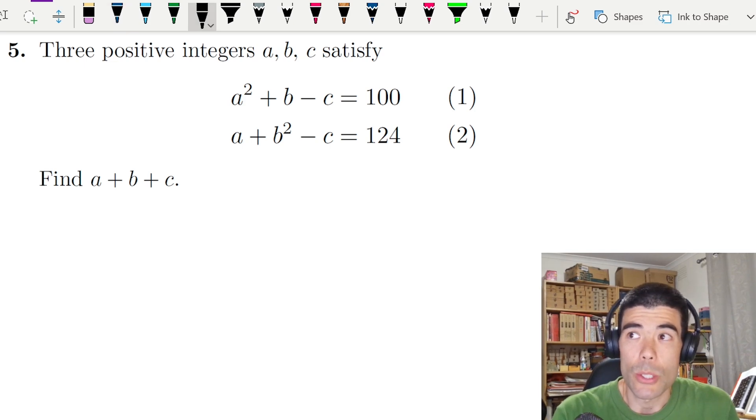What we're going to do is combine the two equations. It makes sense to subtract equation 2 minus equation 1 because that will cancel out c. When we do that, we'll have a minus a squared plus b squared minus b equals 24.